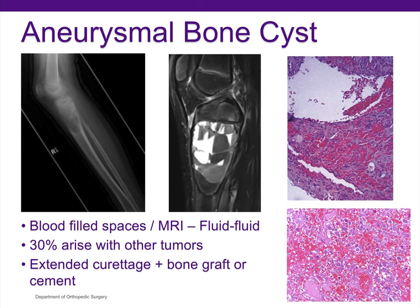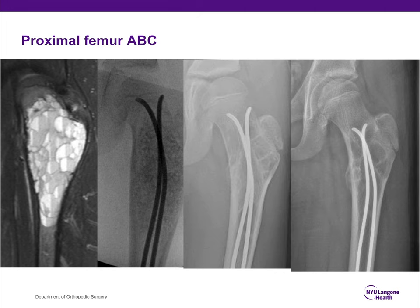Aneurysmal bone cysts are metaphyseal and adjacent to the physis in skeletally immature patients. These are blood-filled spaces, so MRIs show fluid levels. Thirty percent arise from other tumors — the important one to keep in mind is telangiectatic osteosarcoma, and you don't want to miss that diagnosis. When in doubt, a frozen section intraoperatively would be very helpful. As with all benign aggressive tumors, extended intralesional curettage with bone grafting or cement is the treatment of choice. Here's an example of a proximal femur aneurysmal bone cyst that was curetted, bone grafted, and prophylactically fixed with flexible nails, showing healing several years later.